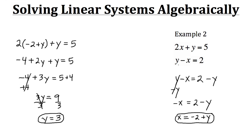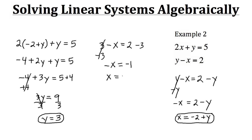Now that we have the y value, we can plug that into either equation — it doesn't matter. The second equation looks easiest to work with, so let's plug in y equals 3. We'll have 3 minus x equals 2. To isolate x, we subtract 3 from both sides, leaving negative x equals 2 minus 3, which simplifies to negative 1. We still need to get rid of the negative in front of x, so we change the signs on both sides. Our negative x becomes positive x, and negative 1 becomes positive 1. So our solution is x is 1 and y is 3.